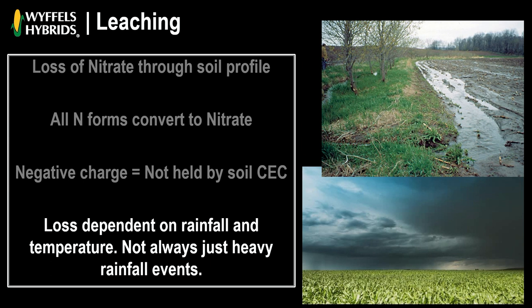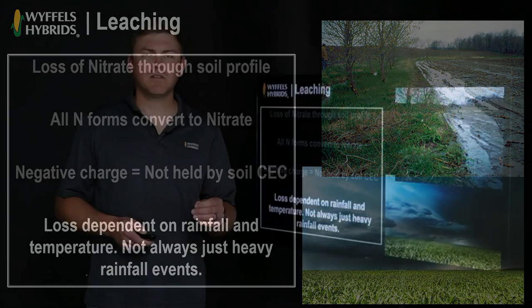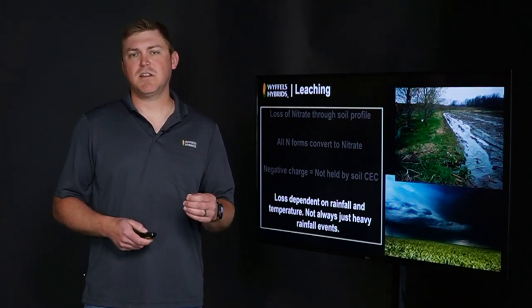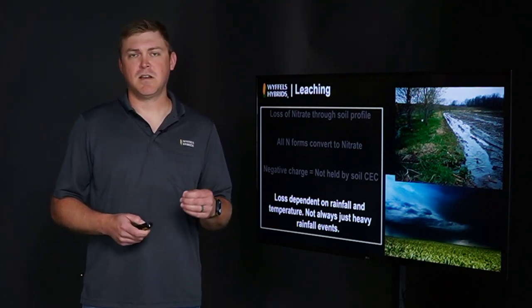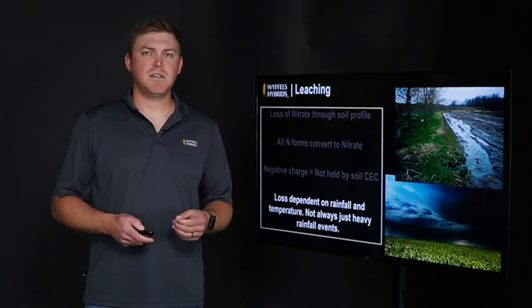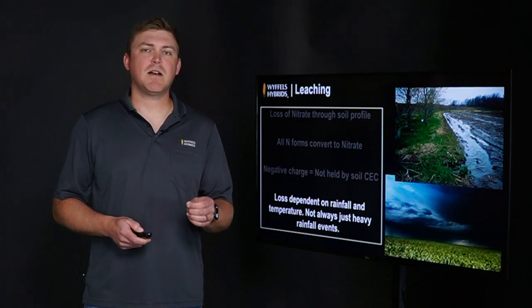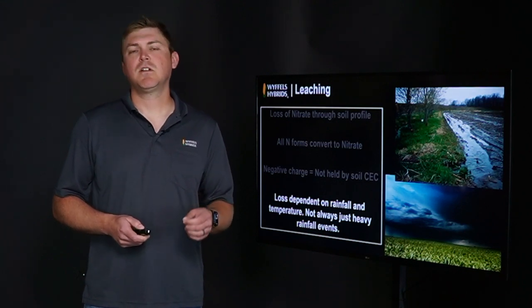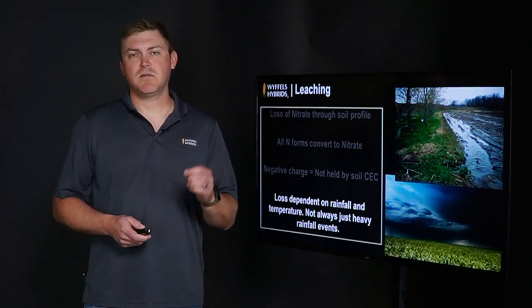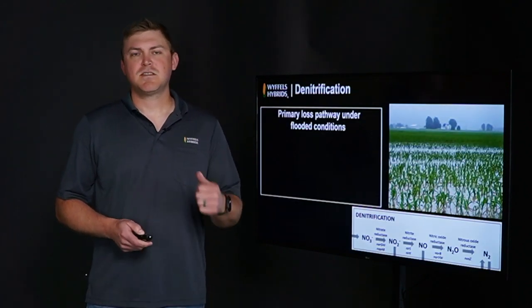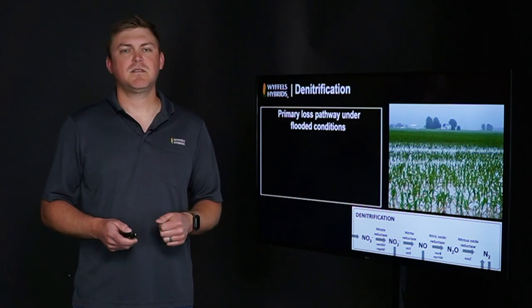However, leaching is not always associated with heavy rainfall events. In fact, a lot of heavy rainfall events produce surface runoff that doesn't move down through the soil profile. Something to keep in mind: if you've had early season heavy rainfall events, some of the nitrogen applied — particularly as anhydrous — is likely not converted to nitrate yet. Temperature is the key factor; you need warm temperatures for ammonia to convert to nitrate before it can be leached through the profile.